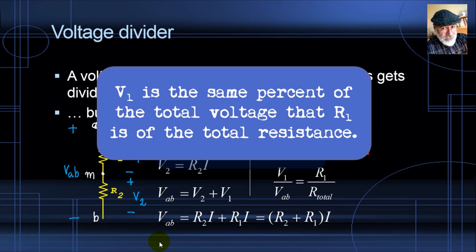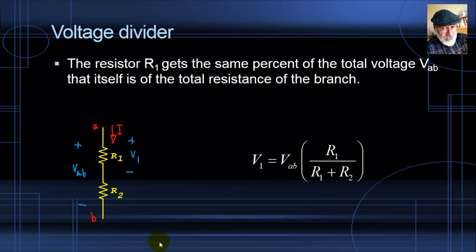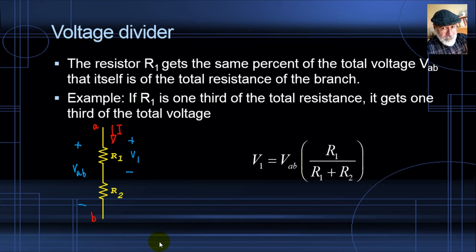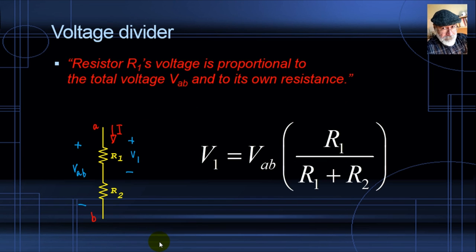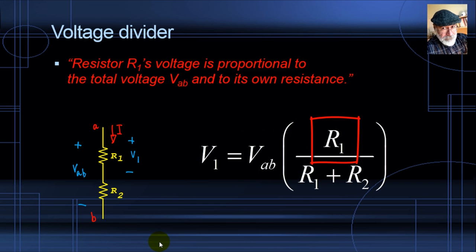So if R1 is one-third of the total resistance, it gets only one-third of the total voltage. The resistor R1's voltage is proportional to the total voltage being split, and proportional to its own resistance. Be very careful when using a voltage divider to feed current to equipment, as we'll illustrate with a numerical exercise.